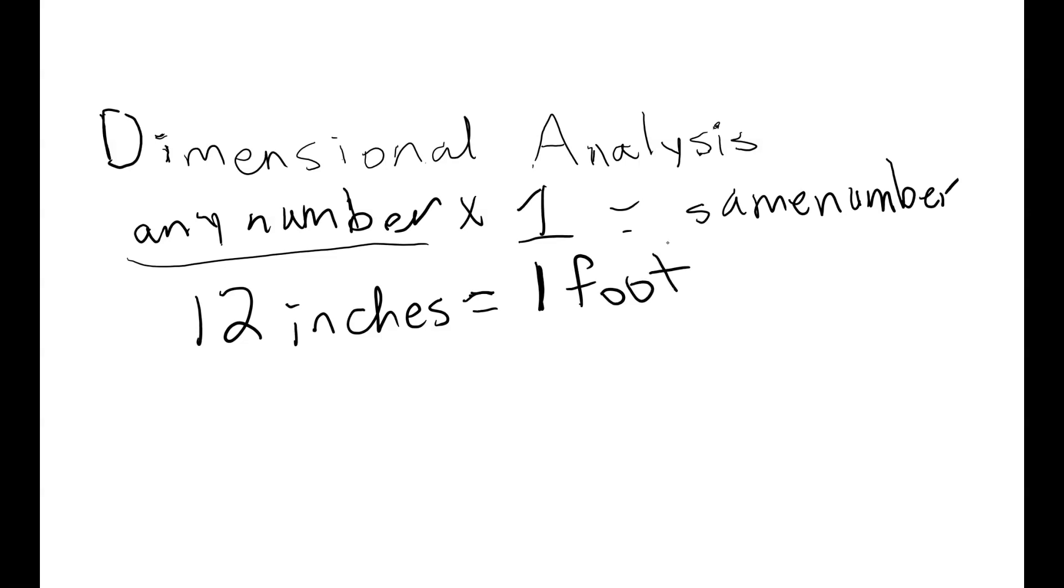We can actually rearrange this equivalency so that we can get all of the units on one side. I can do this one of two ways. I could divide both sides by one foot. And you'll notice that we have one fraction, 12 inches over one foot. But if we have one foot divided by one foot, that is going to give us the value of one. Because anything divided by itself is going to give us one.